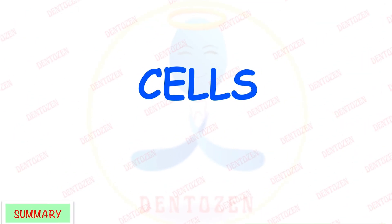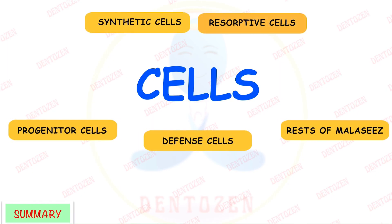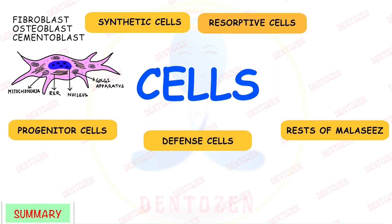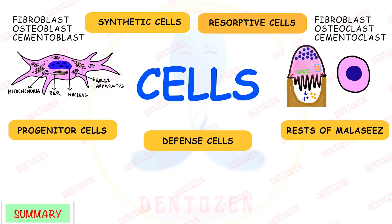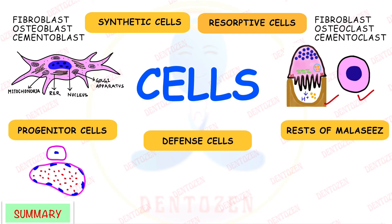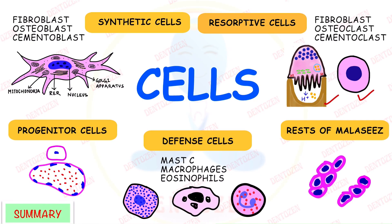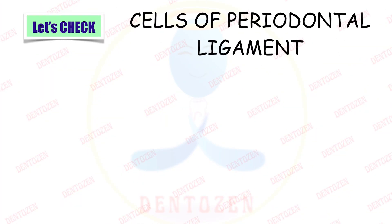In summary, there are five types of cells in the PDL. Synthetic cells: fibroblasts, osteoblasts, and cementoblasts — all with features of active protein-synthesizing cells. Resorptive cells: fibroblasts for collagen, osteoclasts and cementoclasts for bone and cementum — can be multinucleated or mononuclear. Progenitor cells located adjacent to blood vessels, rests of Malassez lying close to cementum, and defense cells: mast cells, macrophages, and eosinophils.